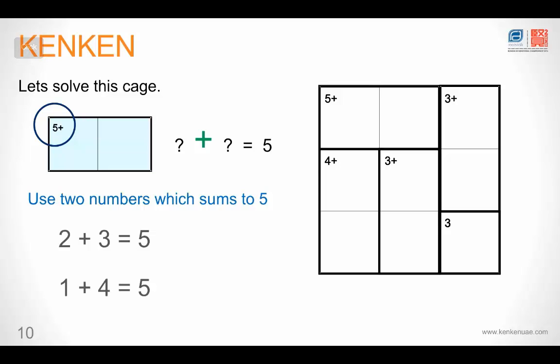Now some of you must be wondering that one plus four is also five. But this option won't be correct for this particular puzzle because if you remember the first rule, this is a three by three puzzle and we can only use the numbers one, two and three. If this were to be a four by four puzzle, we could have used one plus four. So that's it. That's all you need to know to start solving your KenKen puzzles.